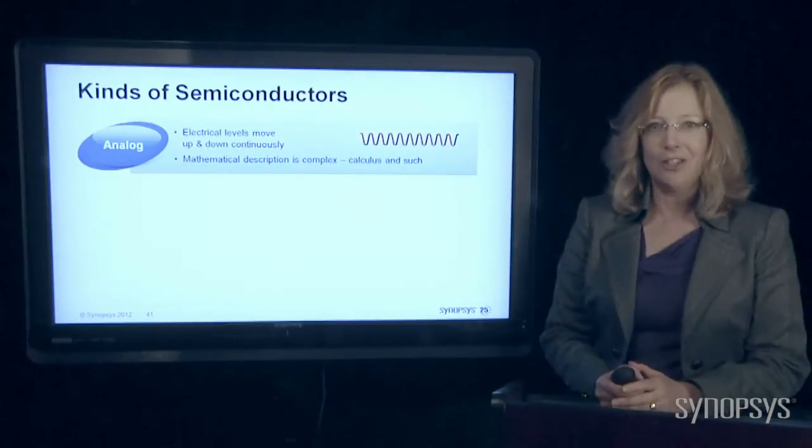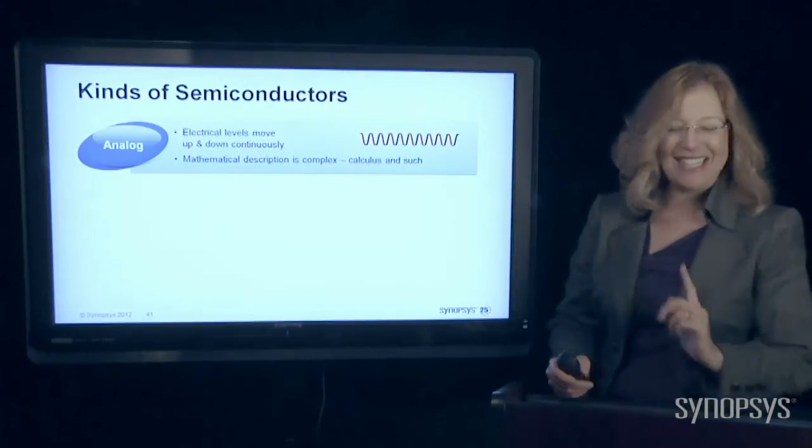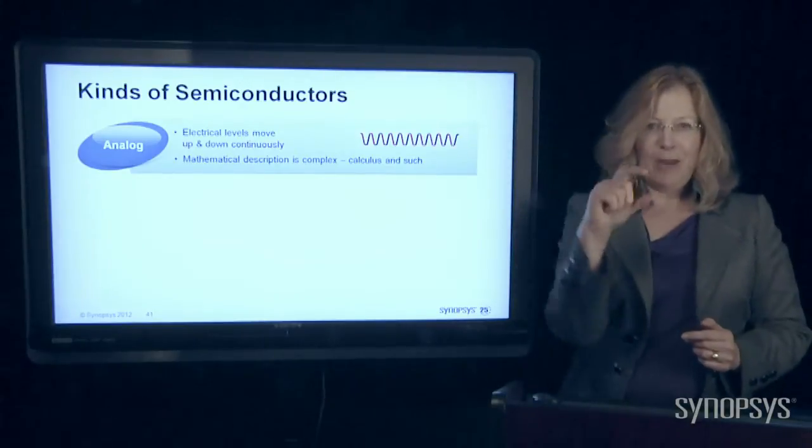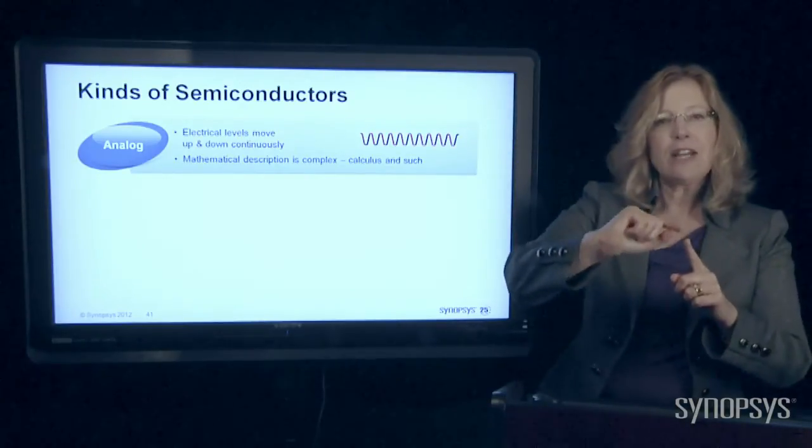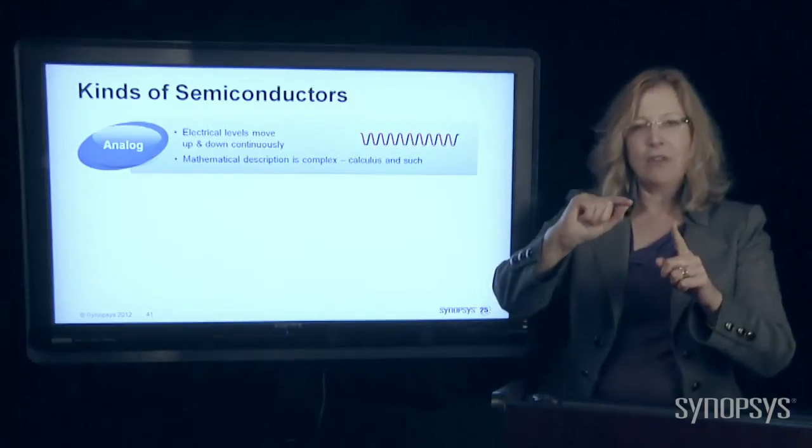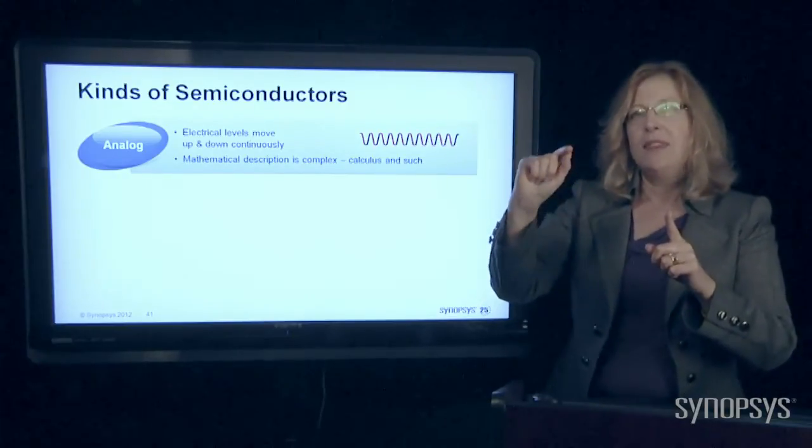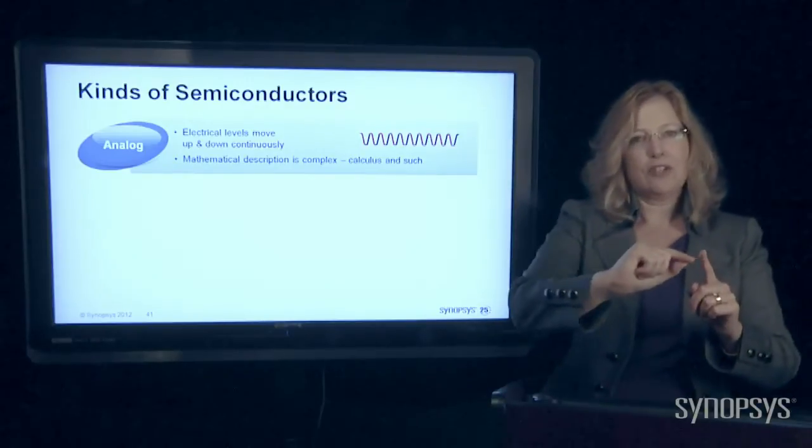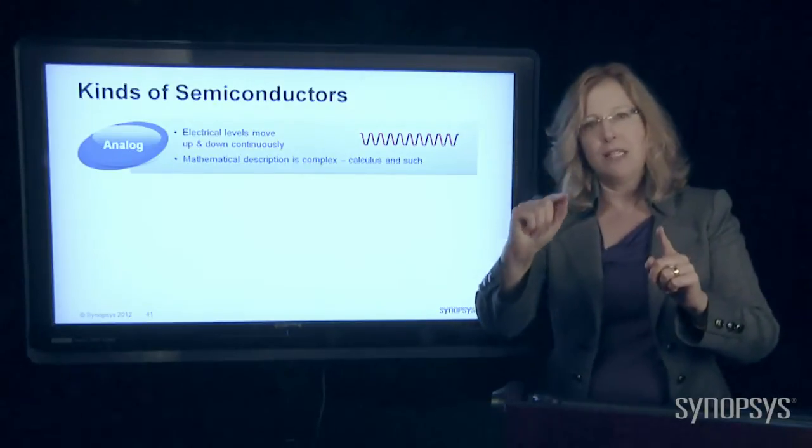The first one is called analog. Did you like that little animation? That's kind of clever. In an analog chip, the levels of electricity go up and down in waves. This is the way the natural world works. So the electricity builds up and it fades away.